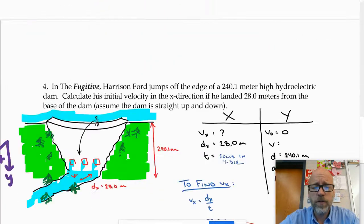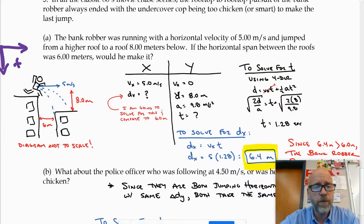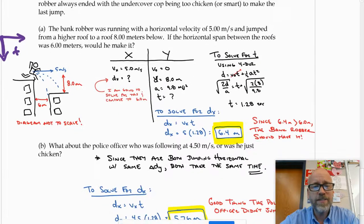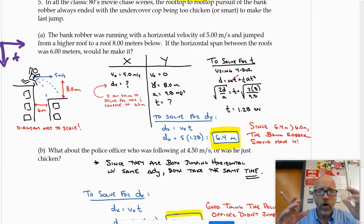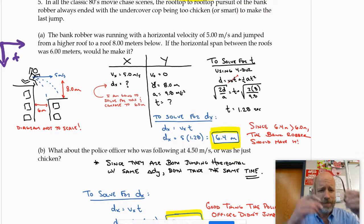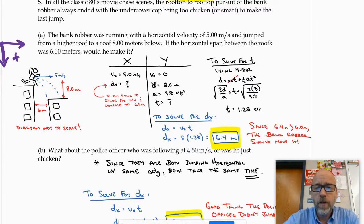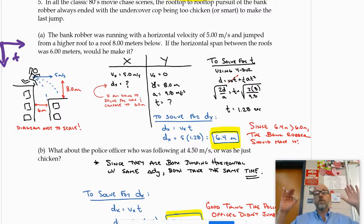Now, if there was one question on this worksheet that sometimes confused students, number five would be it. The reason is people try to put in all the information when in fact you really can't. It says in all the classic 80s movies chase scenes, the rooftop-to-rooftop pursuit of the bank robber always ended with the undercover cop being too chicken or smart to make the last jump. The bank robber was running with a horizontal velocity of 5 meters per second and jumped from a higher roof to a roof 8 meters below. First of all, that's like 25 feet.